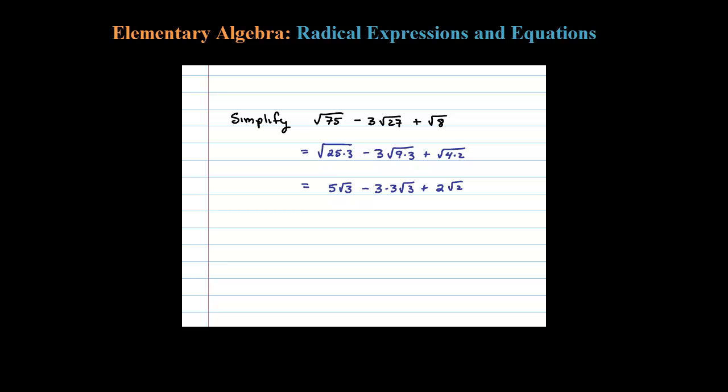So hopefully you saw what I just did: square root of 25 is 5, square root of 9 is 3, square root of 4 is 2. Now we simplify: 5 square root of 3 minus 9 square root of 3 plus 2 square root of 2.